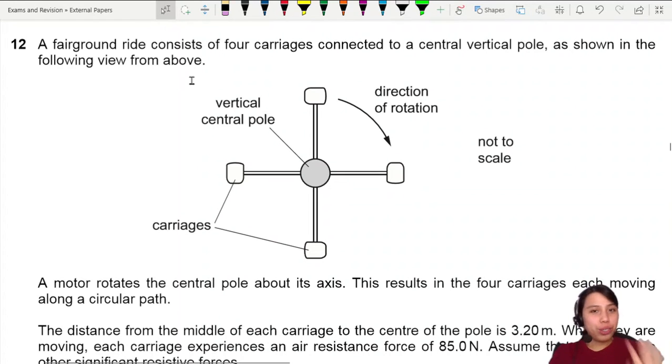A fairground ride consists of four carriages connected to a central vertical pole and it's going to be turning because the direction of rotation is shown. A motor rotates the central pole so each one will move.